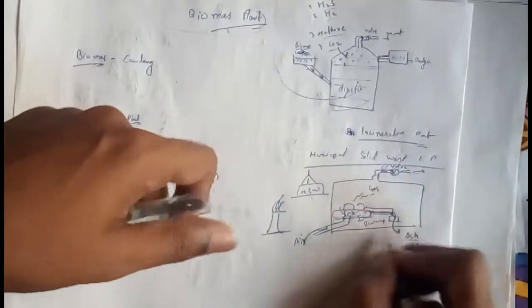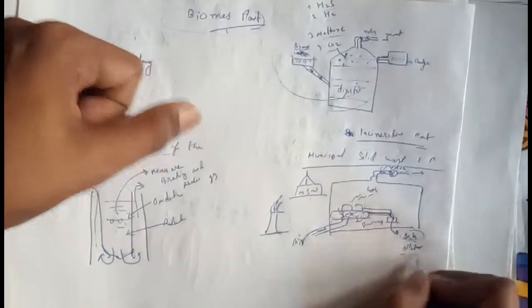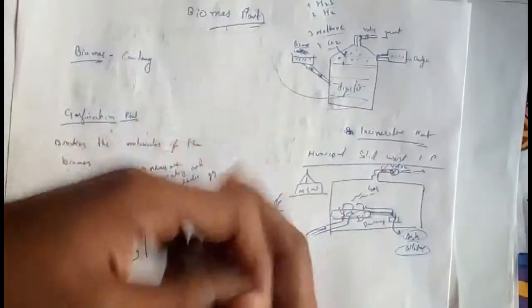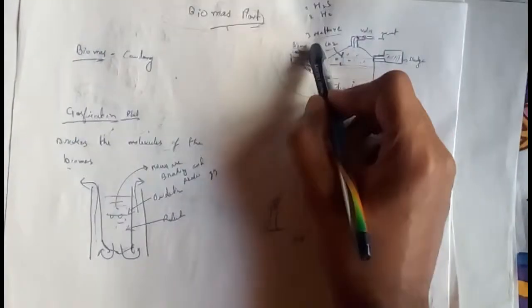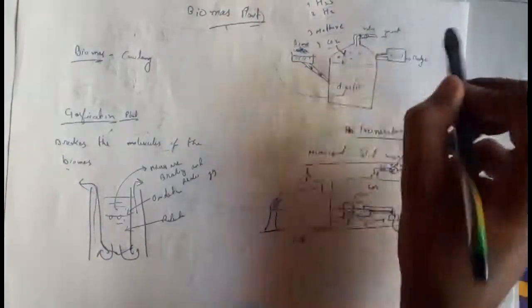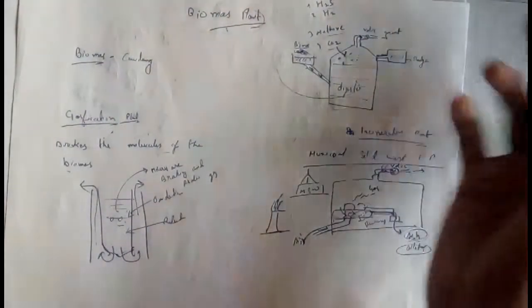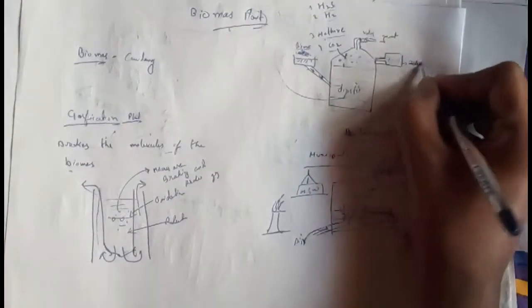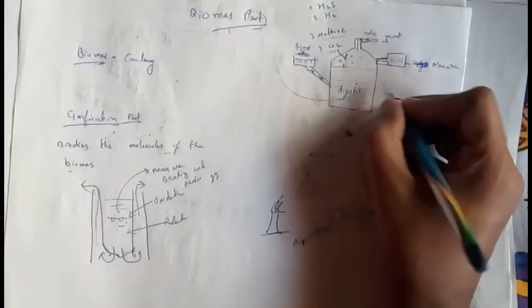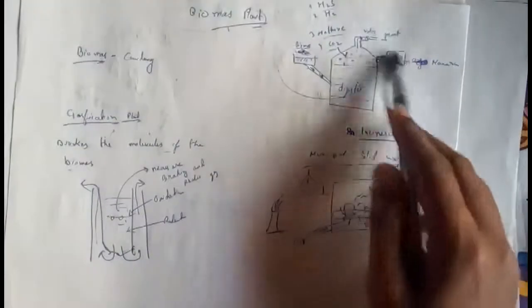The ash that is collected is very dangerous and must be collected properly — it should not be dumped in the ground or in water. To recap: in a biomass plant, biomass is given to the digester where either gasification or incineration happens, gases are released through the valve and used for your kitchen or for producing electricity, and the remaining part is given out as manure. This manure is rich in nitrogen and phosphorus, so it can be used for farming purposes.